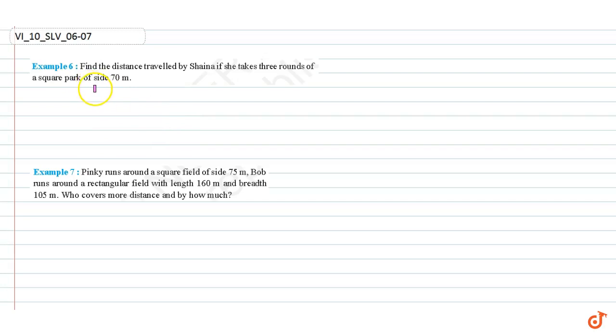In this video, we are going to solve example 6 and 7. Example 6: Find the distance traveled by China if she takes three rounds of a square park of side 70 meters. We know that